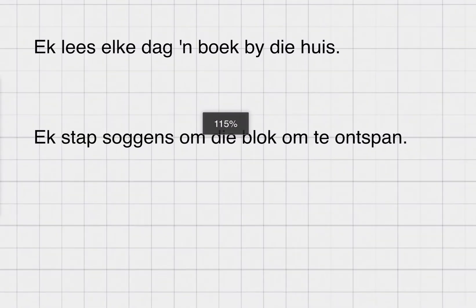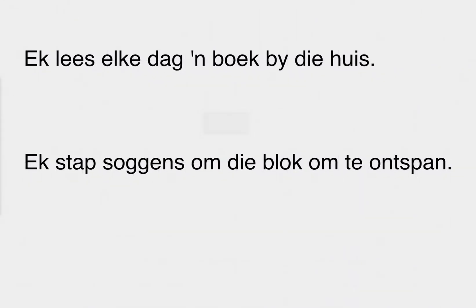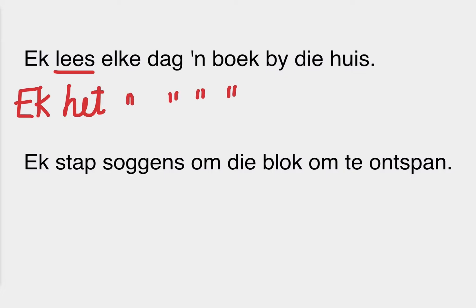So if we look at the first sentence: ek lees elke dag 'n boek by die huis. Remember when we did stompie, you will find verb 1 in the second position in your sentence. So lees in this sentence is your verb — I read every day a book at home. In die verlede tijd, ek het becomes your verb 1, and everything else stays in exactly the same position. So ek het elke dag 'n boek by die huis, and gelees becomes your verb 2. You've added het and ge to your main verb lees.